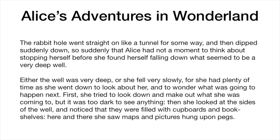Let's take a look together at a passage from Lewis Carroll's Alice's Adventures in Wonderland. As I'm reading this, try to figure out a little bit about the setting. The rabbit hole went straight on like a tunnel for some way, and then dipped suddenly down, so suddenly that Alice had not a moment to think about stopping herself before she found herself falling down what seemed to be a very deep well. Either the well was very deep, or she fell very slowly. She had plenty of time as she went down to look about her, and to wonder what was going to happen next. First, she tried to look down and make out what she was coming to, but it was too dark to see anything. Then, she looked at the sides of the well, and noticed that they were filled with cupboards and bookshelves. Here and there, she saw maps and pictures hung upon the pegs.